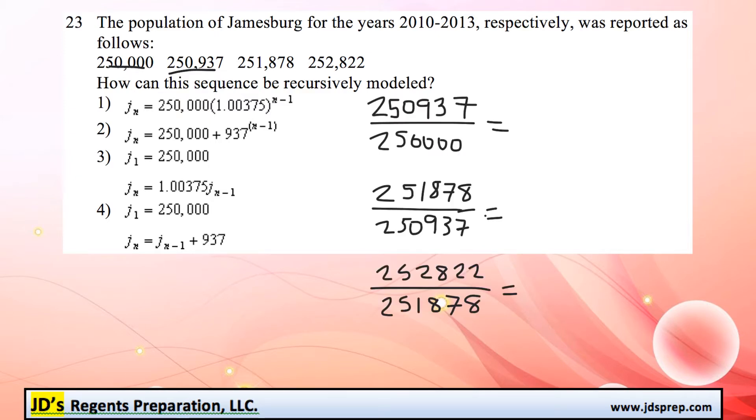And so when you calculate these three out, you'll notice that we do get the same answer for each of them. If we're rounding, they're all pretty darn close to 1.00375. Which is great. That's going to make this much easier to figure out.